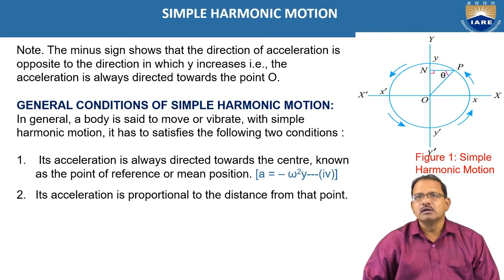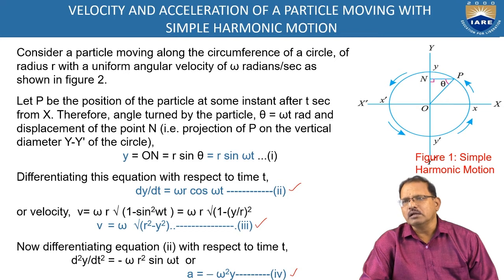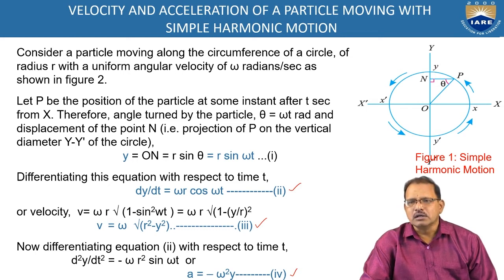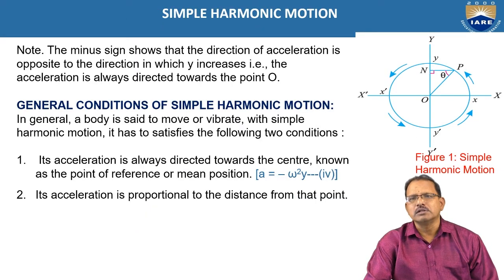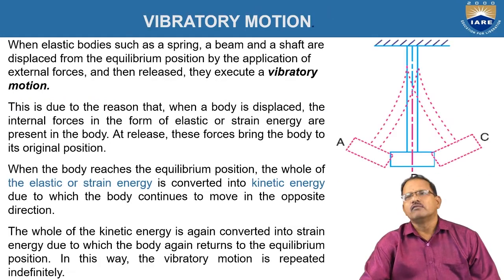From these relations, we observe that the acceleration of the vibrating body executing simple harmonic motion in a vertical line is always proportional to the displacement from the equilibrium position O, and it is acting in the opposite direction of its movement, or in other words, towards the equilibrium position. The general conditions of simple harmonic motion are: the acceleration is always directed towards the center, known as the reference point or mean position, and the acceleration is proportional to the distance from that point.